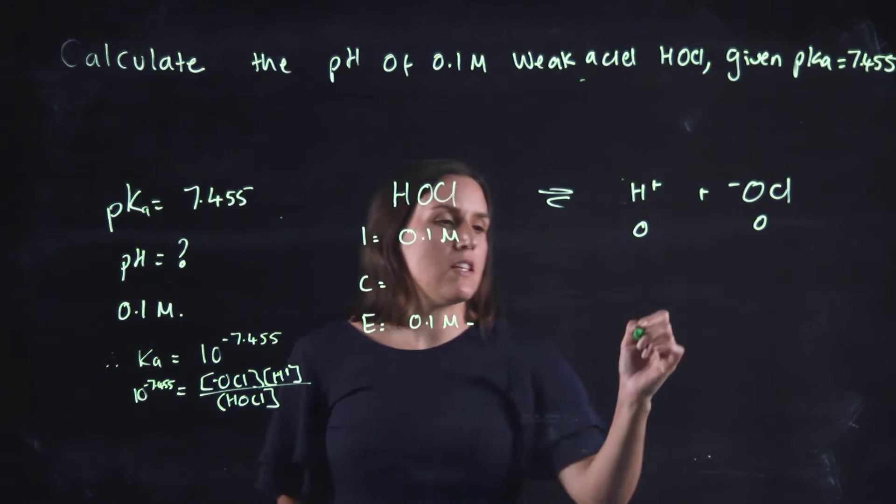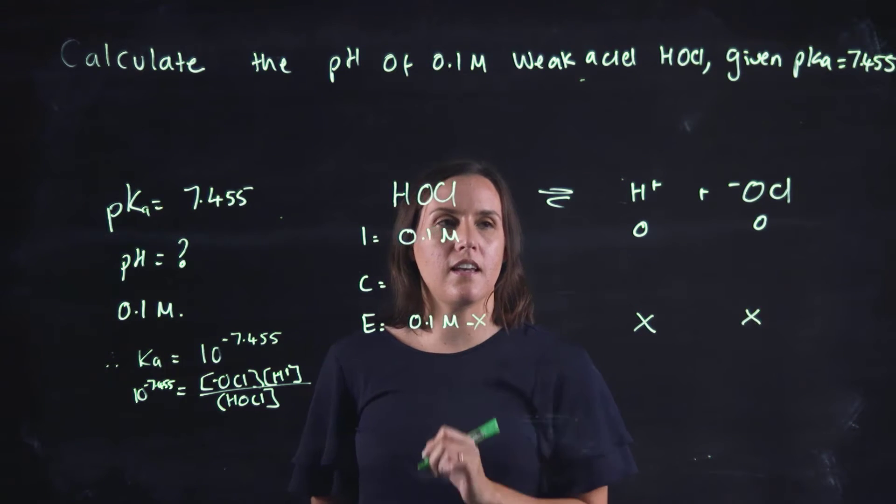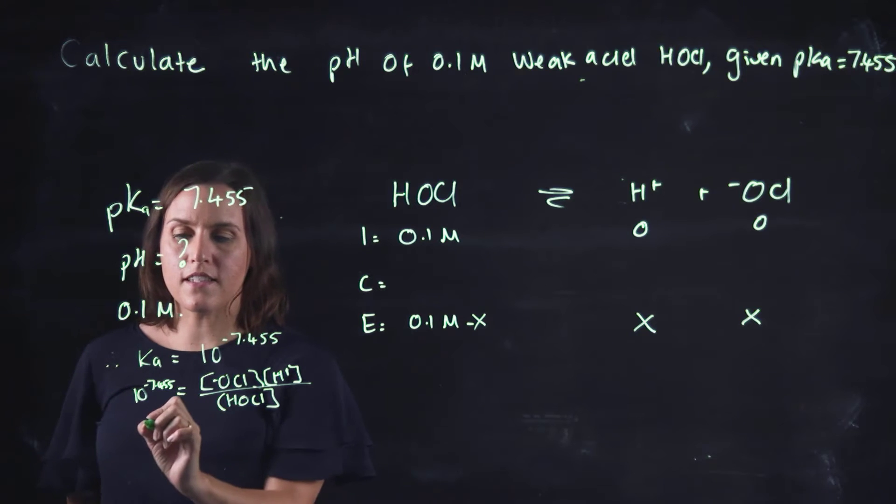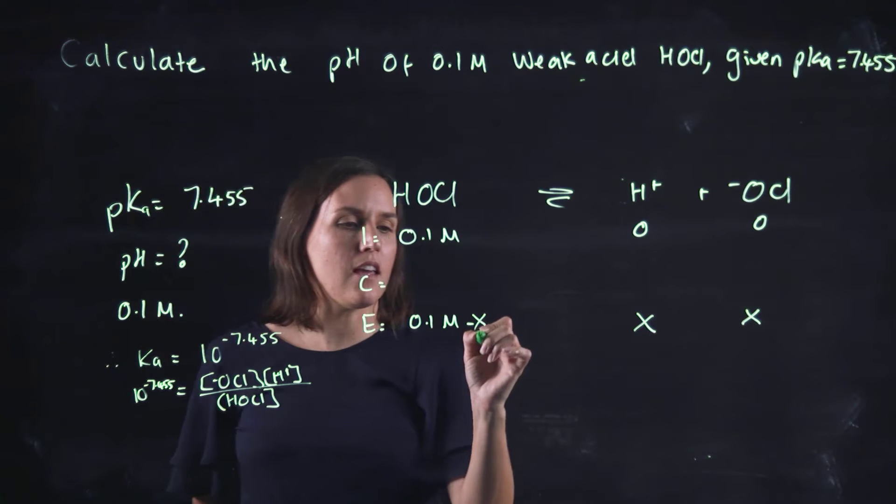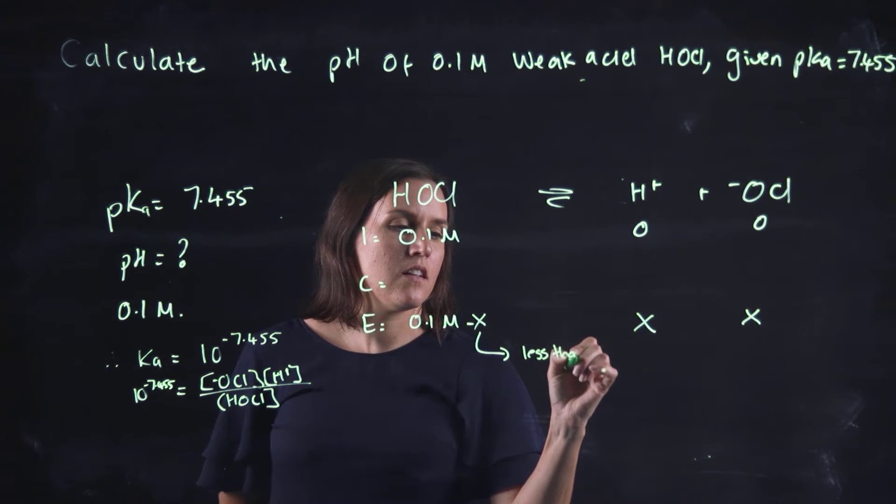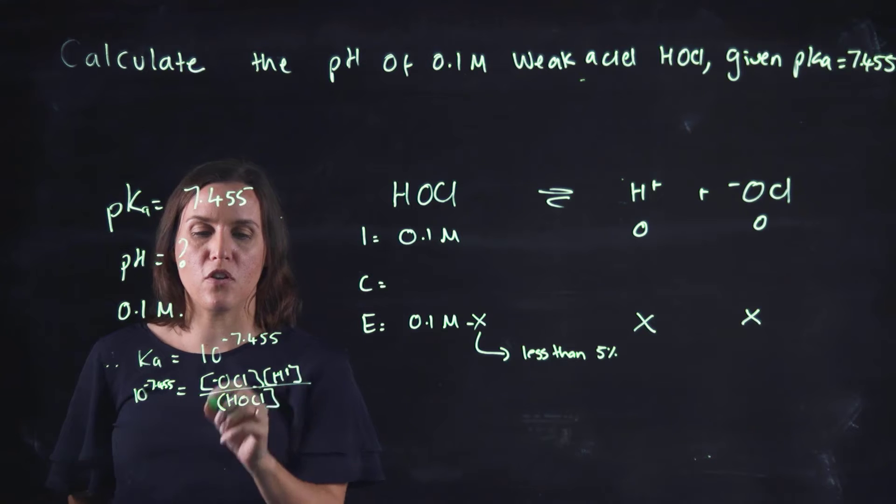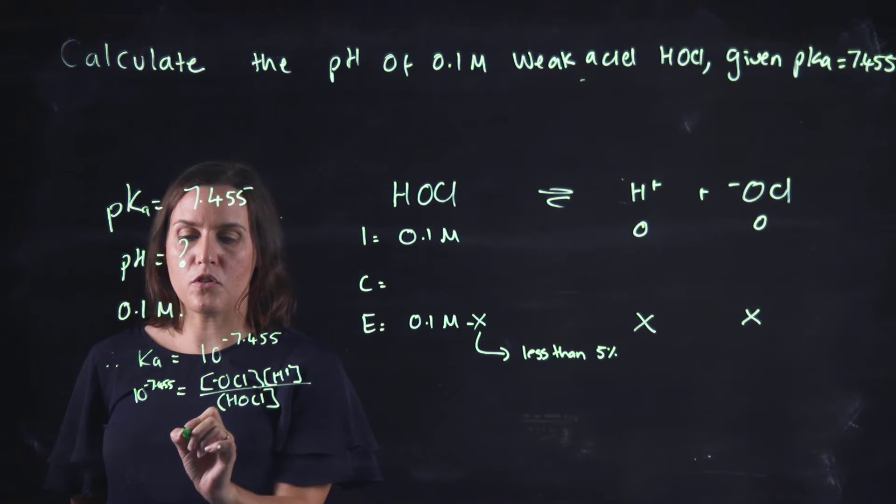So we can call this x, x and minus x. Okay, so quite difficult maths there. We again assume that this is less than 5% and we can back calculate to show that at the end so we don't need to do the quadratic equations.